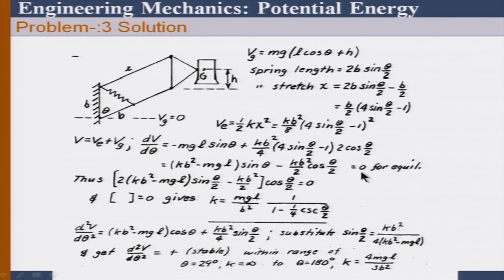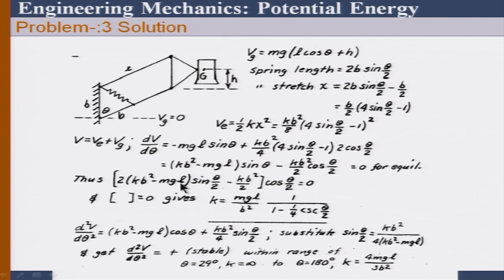We then do dV/dθ = 0 for equilibrium. This gives a solution for K, and if we write sinθ as 2 sin(θ/2)cos(θ/2), we can see there are two solutions coming into play. From one of these, setting it equal to 0, we get a value of K. Importantly, this K will go to infinity at a certain value of theta — that theta equals sin⁻¹(1/4), as given in the problem, which corresponds to approximately 29–30 degrees.